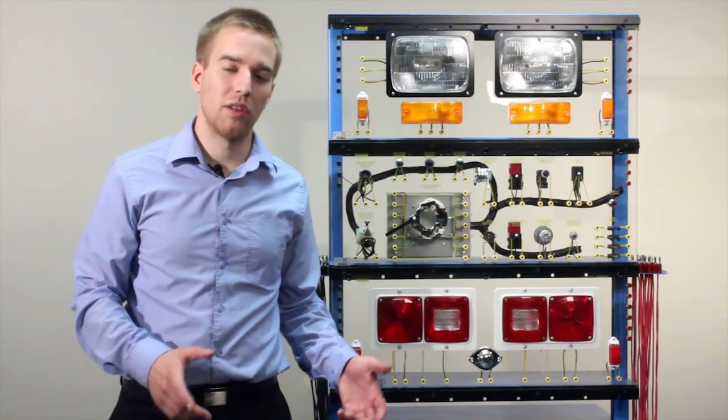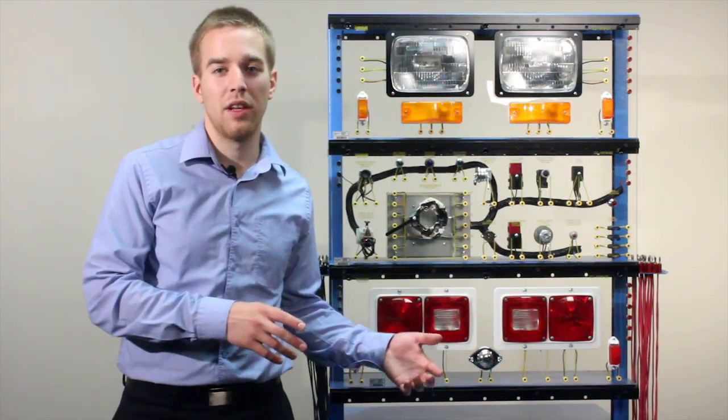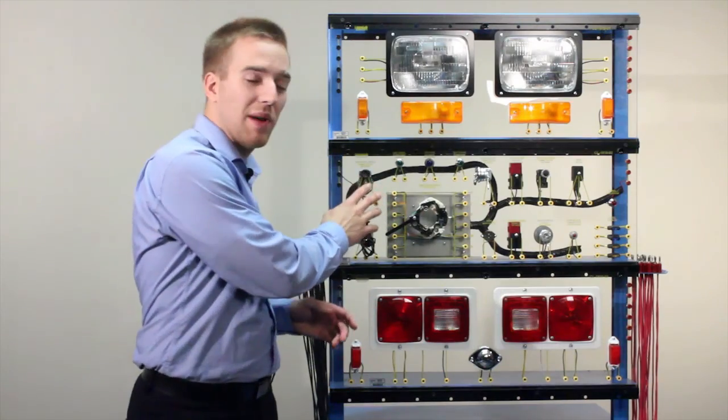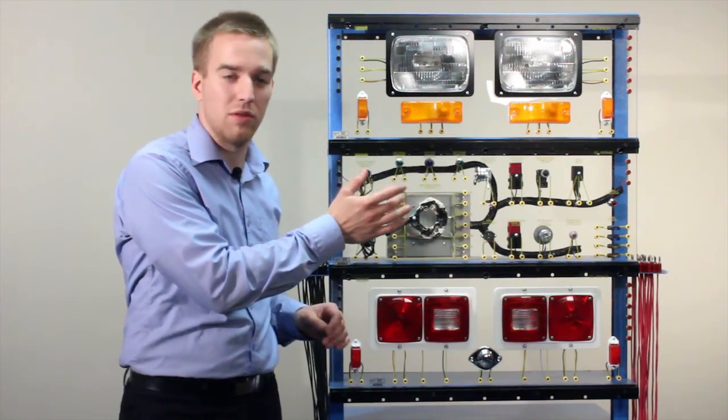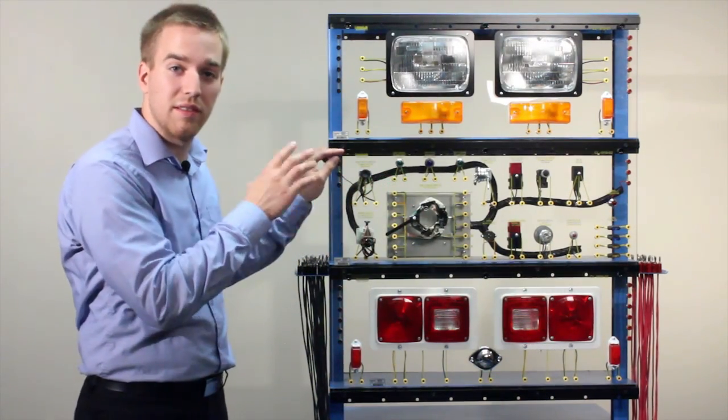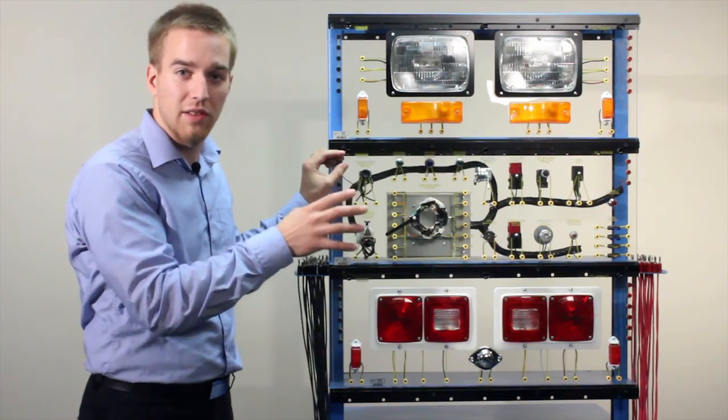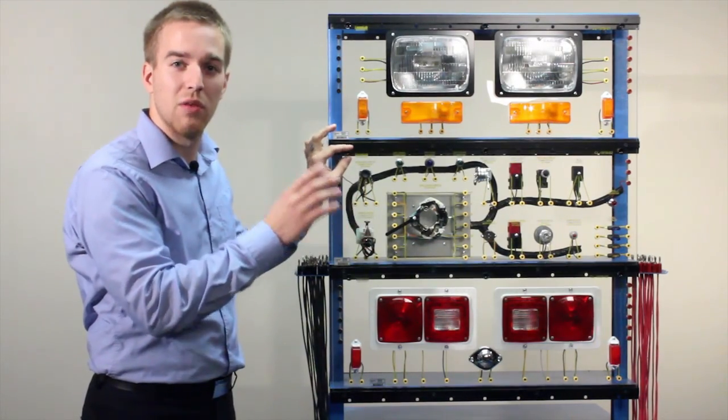Now let's change models. Let's say you want to go more advanced. We have another center panel that has a body control module. So let's remove the CL 1918 1S center panel and we're going to replace it with the BCM panel.